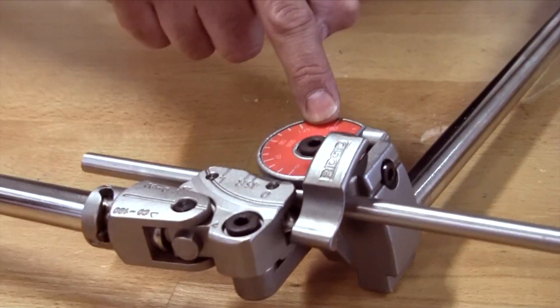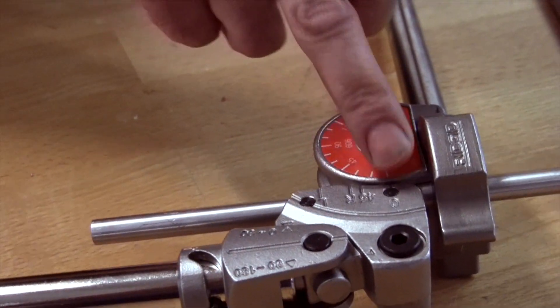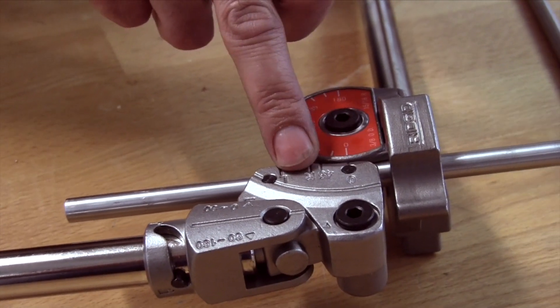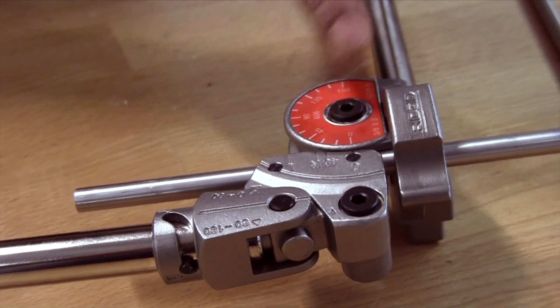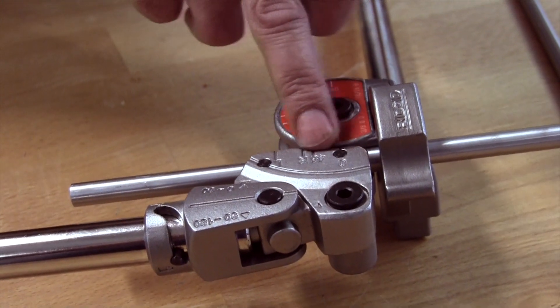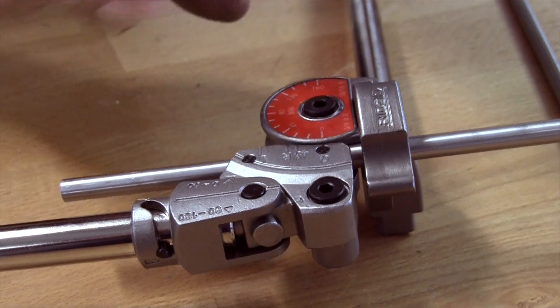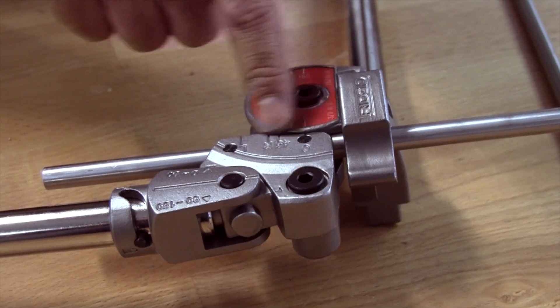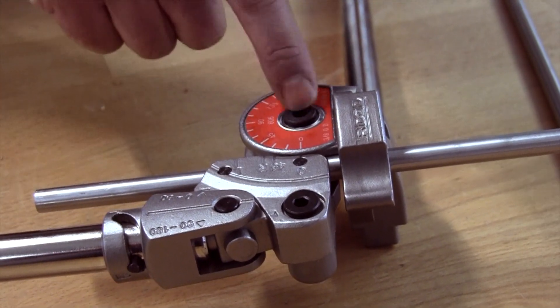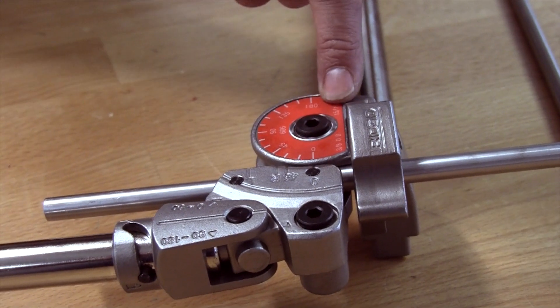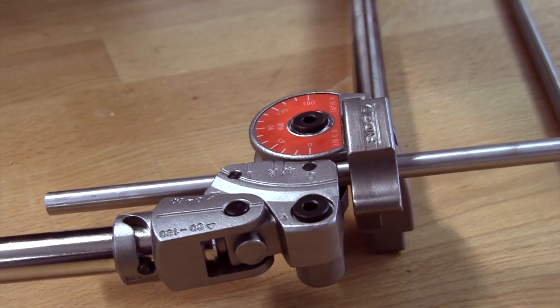So you've got some markings on the former and you've got some markings here on the slide side. These markings here are for doing your gain, so when you want to actually set a bend, these would be for marking out for that. And then here on the former, as you can see, it's all graduated with the angle of bend.